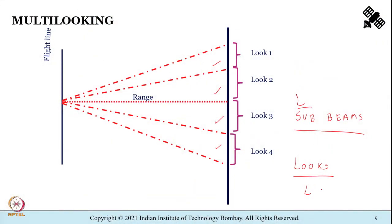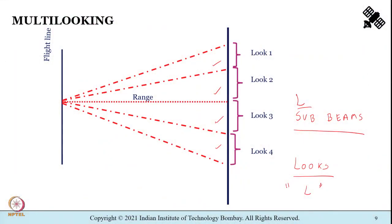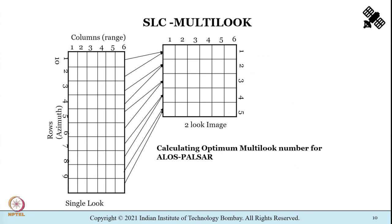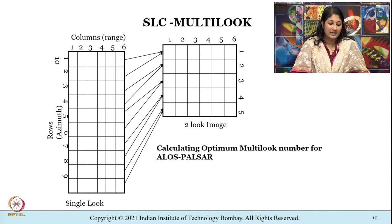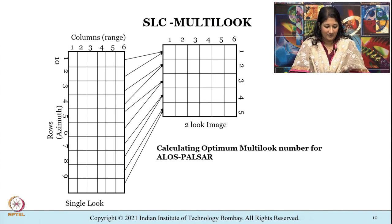The next question is: L stands for the number of looks, but what is the optimum number of looks — is there a magic number? There are relationships that help answer this question as to what is the optimum value of L. What you see here is a schematic which you will follow as part of your tutorials, where multi-looking will be performed using Python.